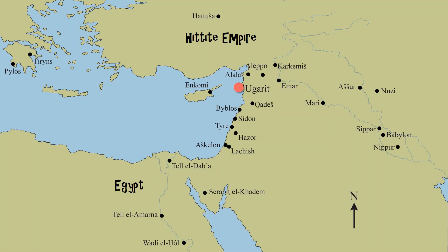Ugarit had used the complicated Akkadian system of cuneiform for a long time, but around 1250 BC they started to do something different. They decided they wanted to write down their own language, and to do this they adapted cuneiform into a new alphabetic system.